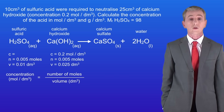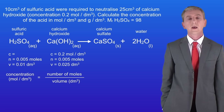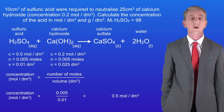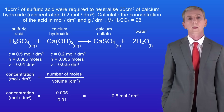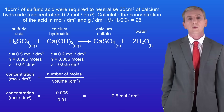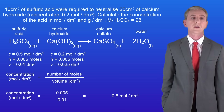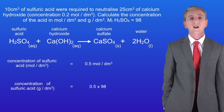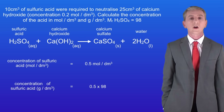We've got 0.005 moles of calcium hydroxide so we must also have 0.005 moles of sulphuric acid. Now we calculate the concentration of the sulphuric acid by dividing the number of moles by the volume. Dividing 0.005 by 0.01 gives us a final concentration of 0.5 moles per decimetre cubed. To calculate the concentration in grams per decimetre cubed we multiply by the relative formula mass. The relative formula mass of sulphuric acid is 98. Multiplying 0.5 by 98 gives us a concentration of 49 grams per decimetre cubed.